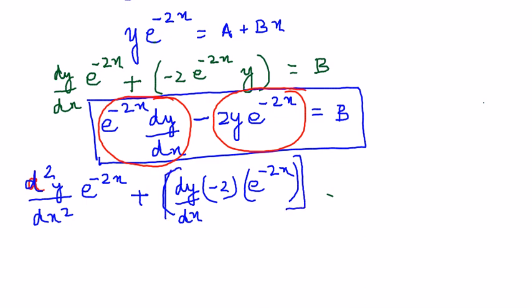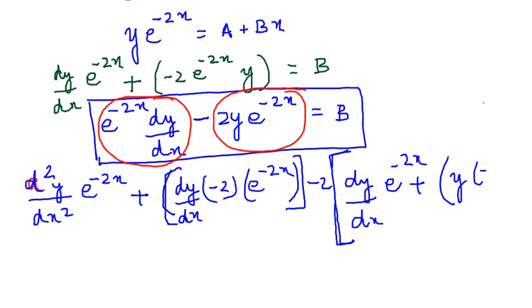Now minus, let us go to the next one. You can take even that minus 2 outside. So minus 2 into, first let us differentiate y. It will be dy by dx e power minus 2x plus. We leave y as it is and differentiate e power minus 2x. So you get minus 2 into e power minus 2x. Close the brackets.